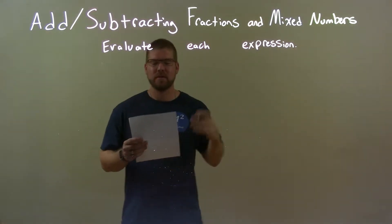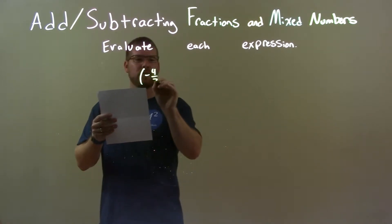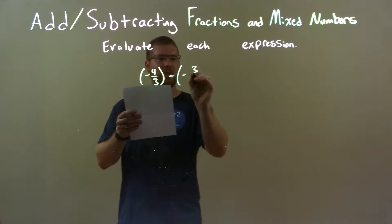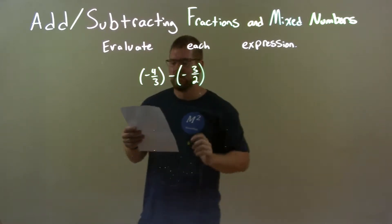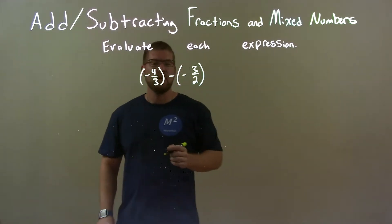So, if I was given these numbers, negative four-thirds minus a negative three-halves. So, negative four-thirds minus a negative three-halves.